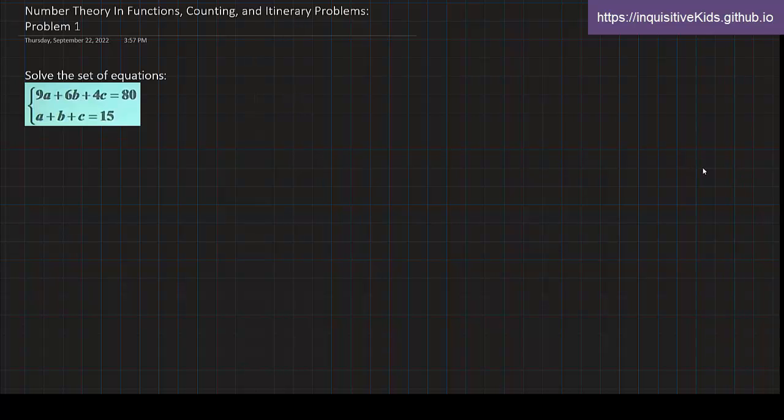Solve the following set of equations. We have two equations grouped up together by a bracket. We have 9a plus 6b plus 4c is equal to 80, as well as a plus b plus c is equal to 15.